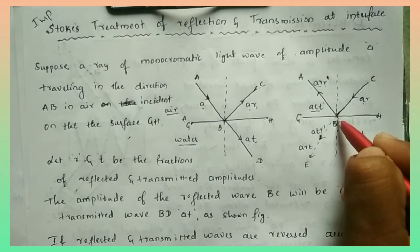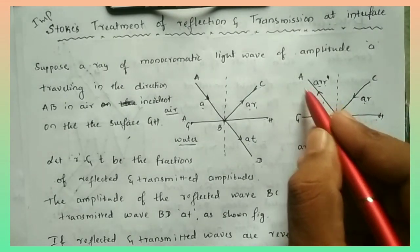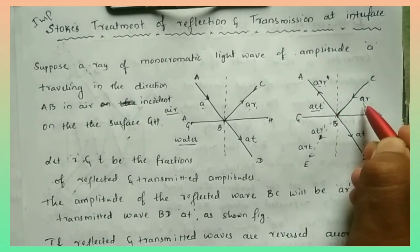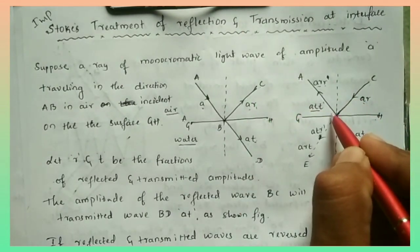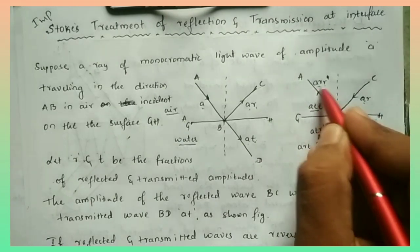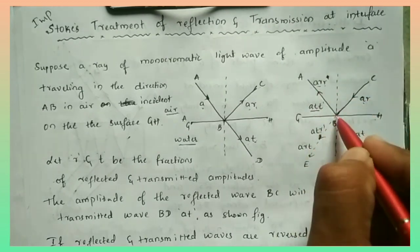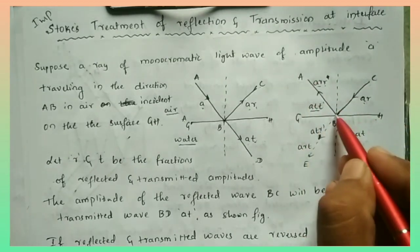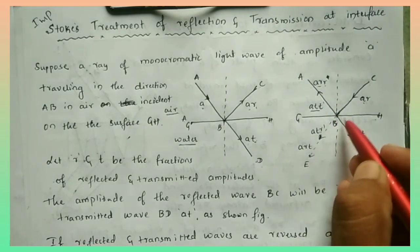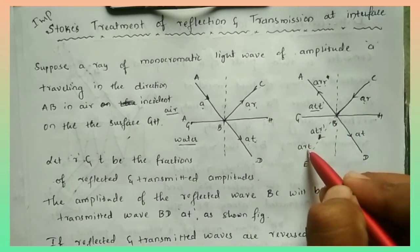Applying reversibility: ray CB with amplitude AR is incident on interface GH and is reflected back with amplitude ARR, and transmitted with amplitude ART. Similarly, ray DB with amplitude AT is incident and reflected back in the second medium with amplitude ATR', and transmitted with amplitude ATT'.